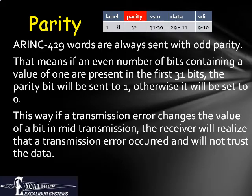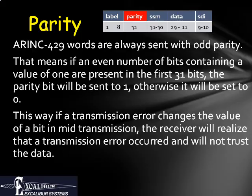Parity is a common error detection mechanism used in computers and particularly in communication systems. By guaranteeing that the sum of all the one bits is always odd, it gives the receiver a way to check for transmission errors. If a transmission error causes a single bit to change values, this will also cause the parity — or sum of all the one bits — to turn even. This will be detected by the receiver. Although the receiver won't know which bit was changed, it will know that the data can't be trusted.